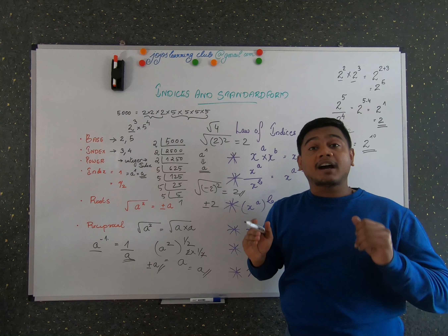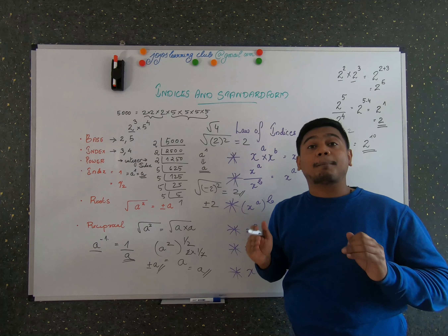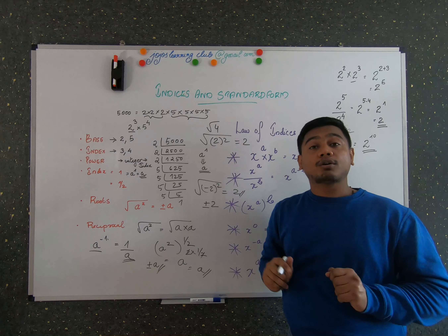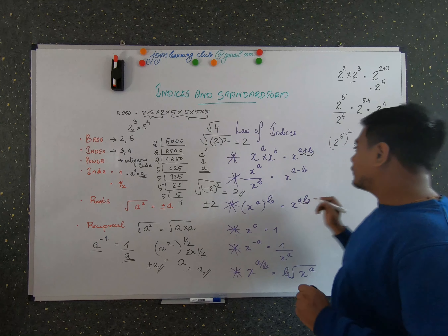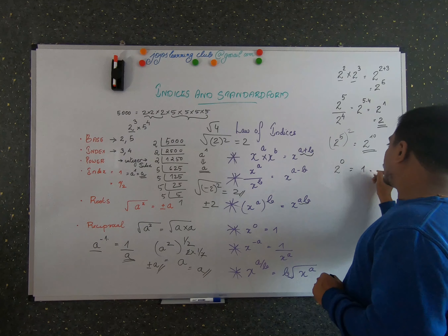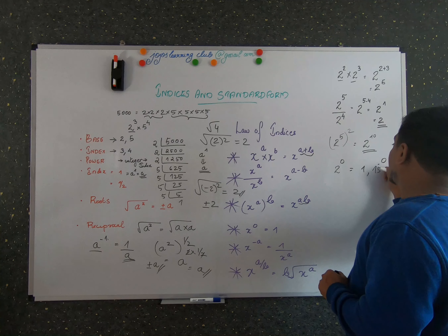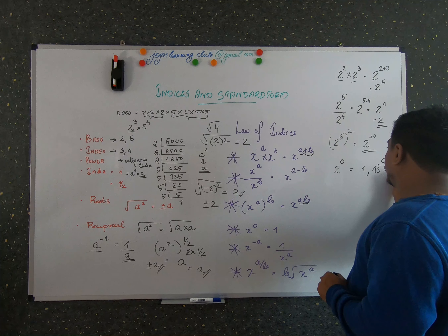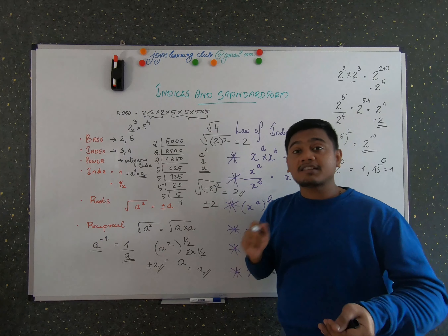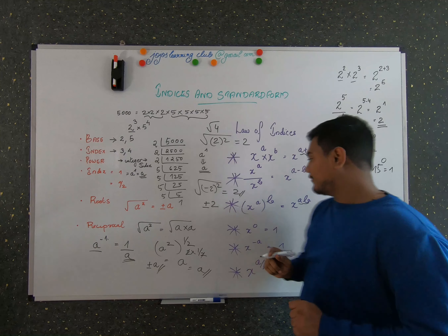The fourth law: any number raised to the power of 0 is equal to 1. So 2 raised to 0 equals 1, and 15 raised to 0 also equals 1. Any number whatsoever, when raised to the power of 0, is always 1.